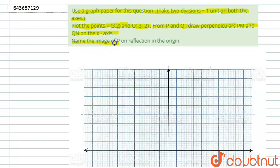And onto the axes, name the image of P on reflection in the origin. So for that, let's start with this solution.